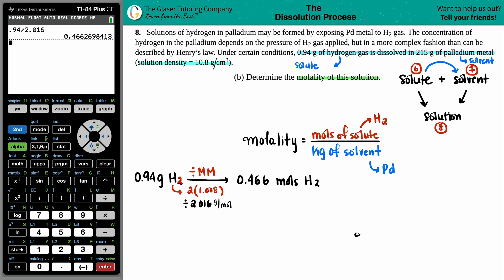When calculating molality, which is moles of solute divided by kilograms of solvent, I know 0.466 goes on top. Now for the kilograms of solvent: they gave us 215 grams of Pd. Converting grams to kilograms, divide by 1,000 or move the decimal left three places. This gives 0.215 kilograms, which goes on the bottom.